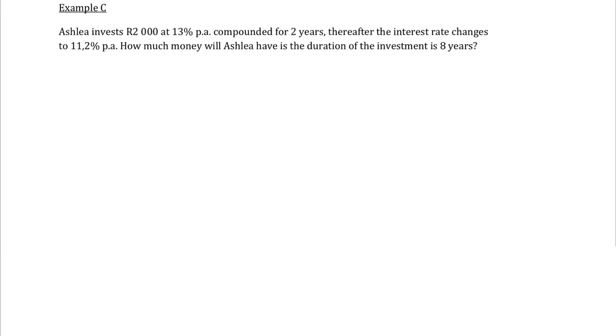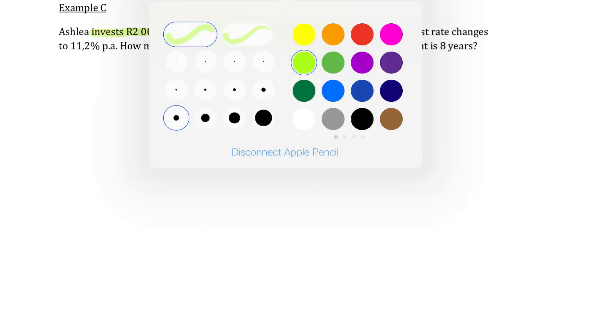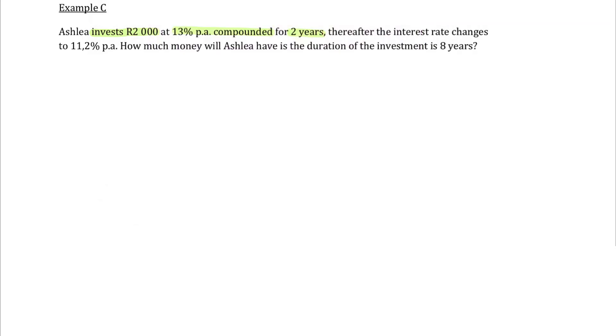Okay. Let's look at Ashley's problem here. Ashley invests 2,000 Rand at 13% per year compounded for two years. Thereafter, the interest rate changes to 11.2% per annum. How much money will Ashley have, so that's an A value, if the duration of the whole investment is eight years? For these type of problems where we have multiple things happening, it's a nice idea to use a timeline to capture all the story.